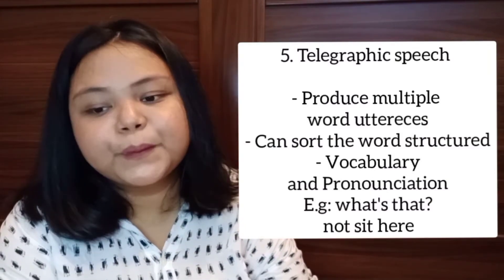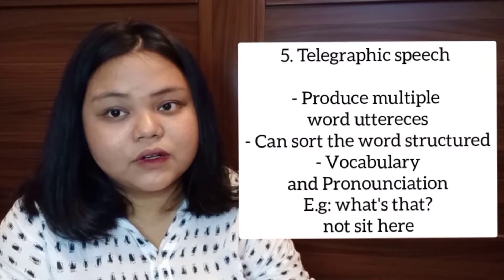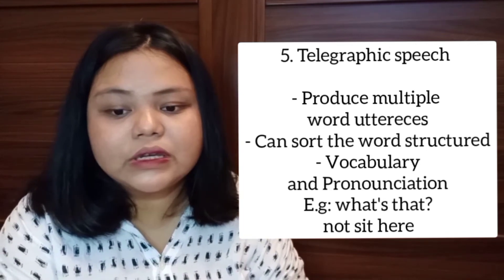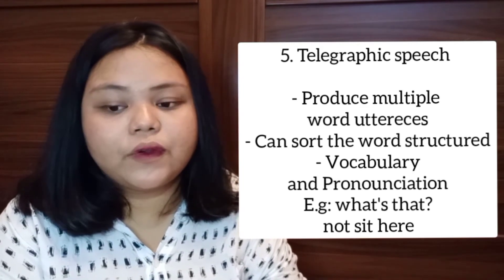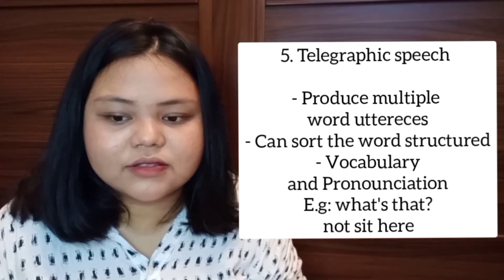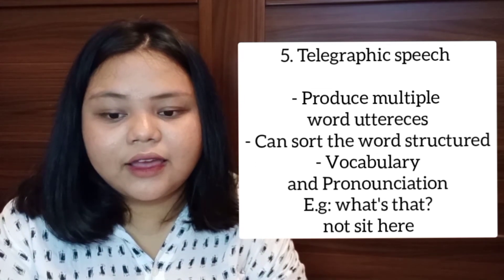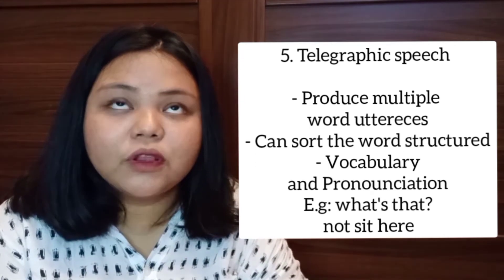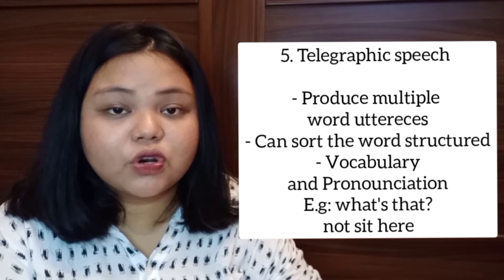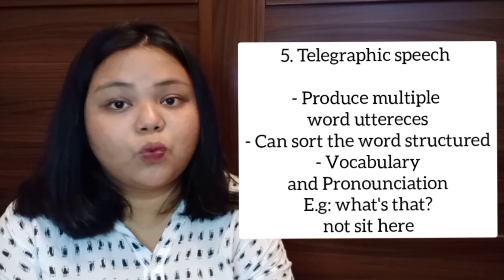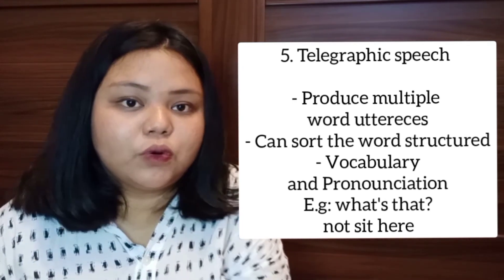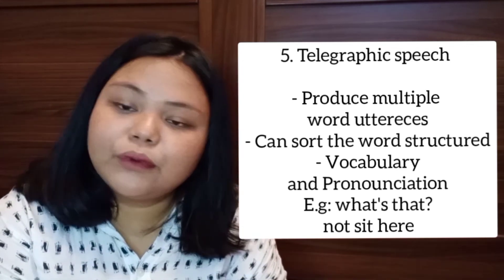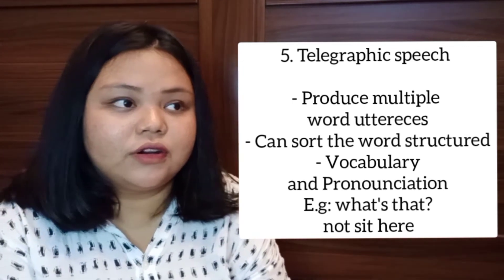The last step is telegraphic speech. In this step, children start to produce multiple-word utterances and can already sort word structure. The vocabulary of children grows rapidly to hundreds of words, and the pronunciation of words becomes increasingly similar to that of adults — for example, 'what that' or 'not sit here.'